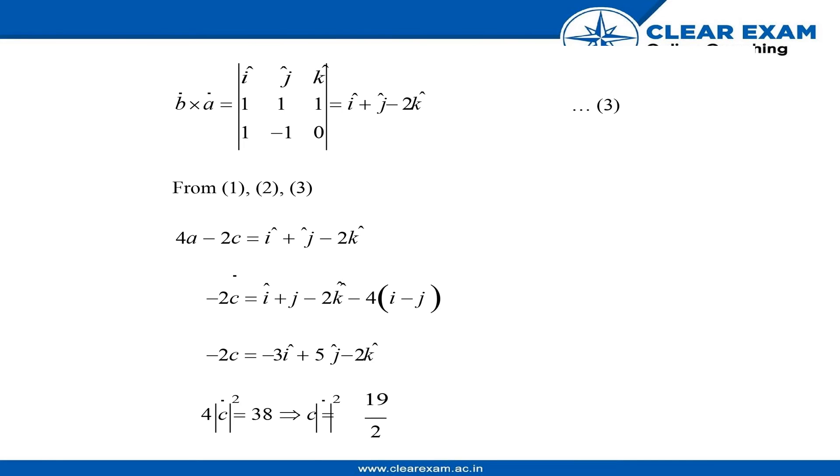Moving to the next page, we have calculated b cross a. Since b vector and a vector were both given to us, by calculating the cross product, we get this result, which is considered as the third equation.